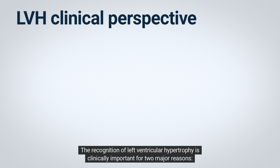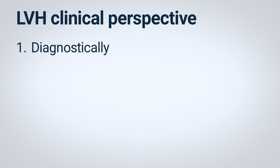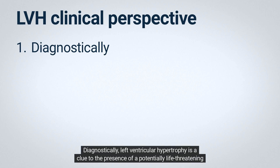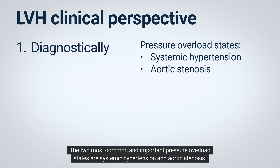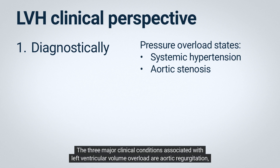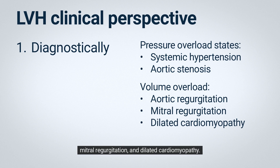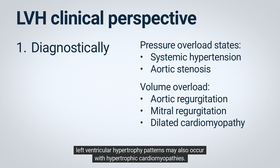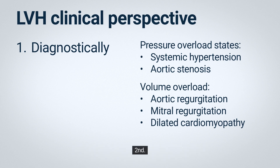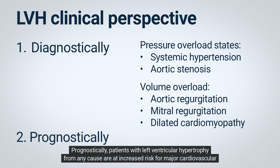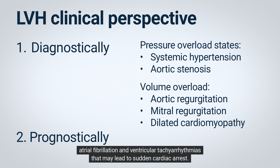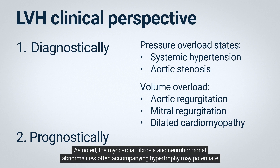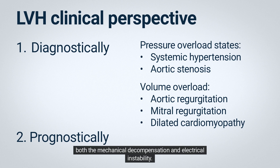The recognition of left ventricular hypertrophy is clinically important for two major reasons. First, diagnostically, left ventricular hypertrophy is a clue to the presence of a potentially life-threatening pressure or volume overload state. The two most common pressure overload states are systemic hypertension and aortic stenosis. The three major conditions associated with left ventricular volume overload are aortic regurgitation, mitral regurgitation, and dilated cardiomyopathy. Left ventricular hypertrophy patterns may also occur with hypertrophic cardiomyopathies. Second, prognostically, patients with left ventricular hypertrophy from any cause are at increased risk for major cardiovascular complications, including chronic heart failure and serious atrial or ventricular arrhythmias, including atrial fibrillation and ventricular tachyarrhythmias that may lead to sudden cardiac arrest. The myocardial fibrosis and neurohormonal abnormalities often accompanying hypertrophy may potentiate both the mechanical decompensation and electrical instability.